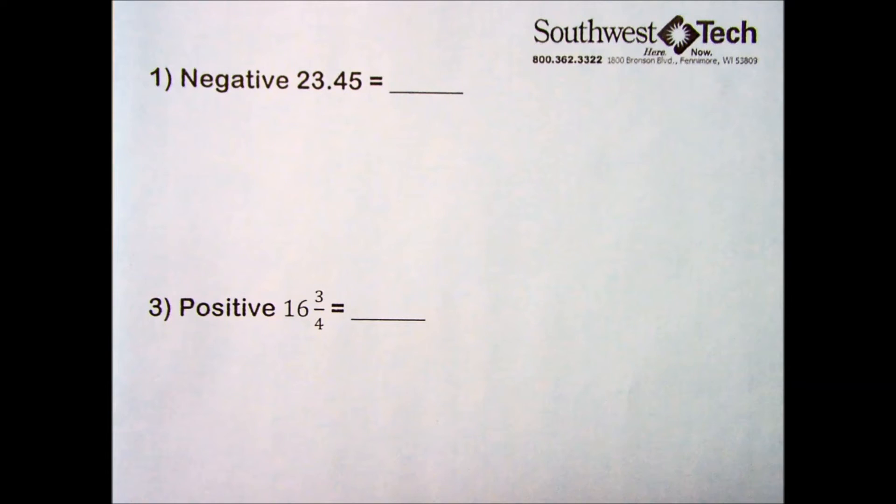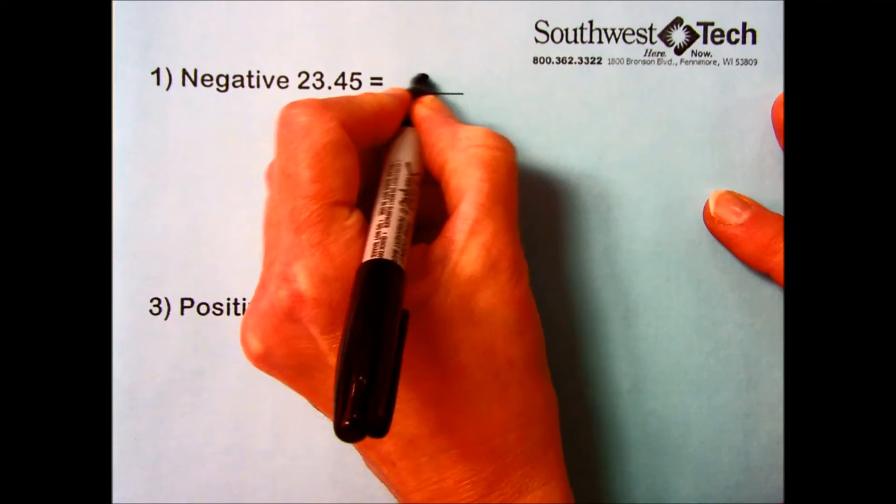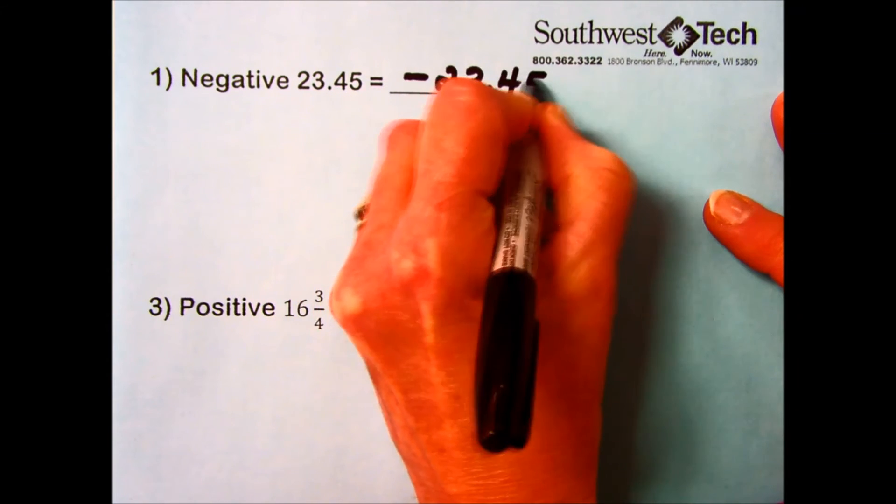Keep in mind, positive numbers can be written either with a positive sign or without any sign. Negative numbers must always be written with a negative sign. The first one is pretty clear: negative 23.45. The symbol representation requires a negative sign: -23.45.